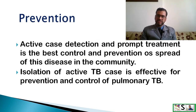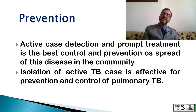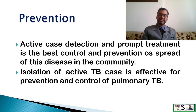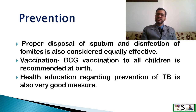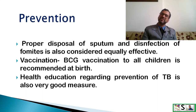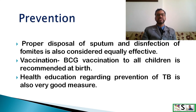Prevention is better than cure. Active case detection and prompt treatment is the best control and prevention of spread of this disease in the community. Isolation of active TB cases is effective for prevention and control of pulmonary TB only for the period of communicability. Proper disposal of sputum and disinfection of fomites is also considered equally effective. BCG vaccination for all children is recommended at birth, and health education regarding prevention of TB is also a very good measure.